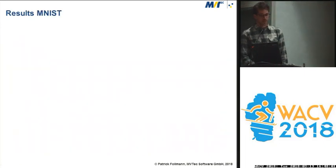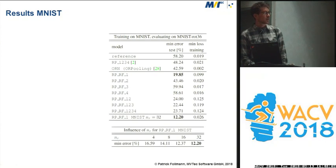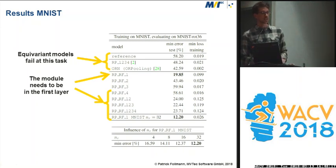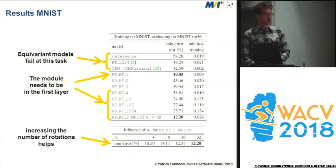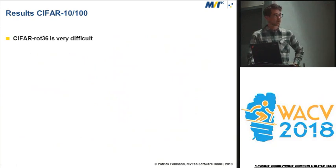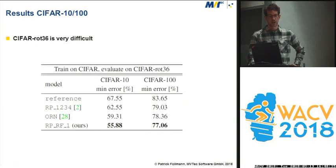Looking at the results, we can outperform the equivariant models. We also found that positioning the invariant convolution module at different layers matters — it needs to be in the first layer to obtain reasonable results. Increasing the number of rotations also improves performance. On CIFAR-10 and CIFAR-100, the task is a little more difficult, but we can still outperform previous equivariant models.